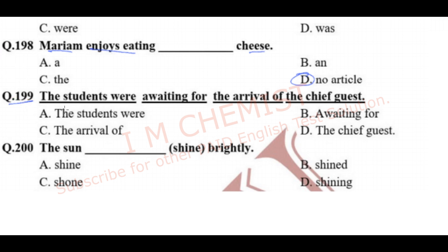Question number 199: 'The students were awaiting for the arrival of the chief guest.' We have to find the error. The answer is option B — 'awaiting for' is incorrect. It should be 'waiting for', not 'awaiting for'.